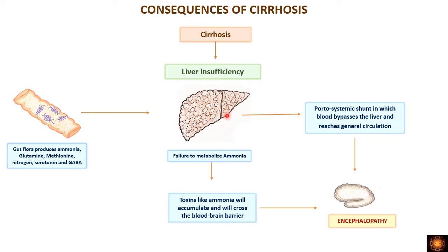When blood cannot flow through the portal vein into the fibrotic liver, a portosystemic shunt develops. Blood bypasses the liver, going directly from the portal system into the systemic circulation. Whatever toxins are present in the portal vein then enter the systemic circulation and go directly to the brain, crossing the blood-brain barrier and causing hepatic encephalopathy.